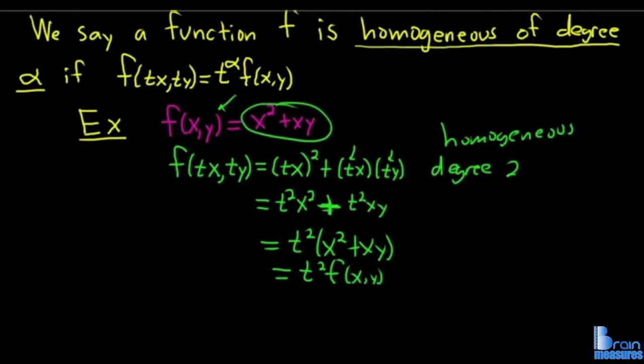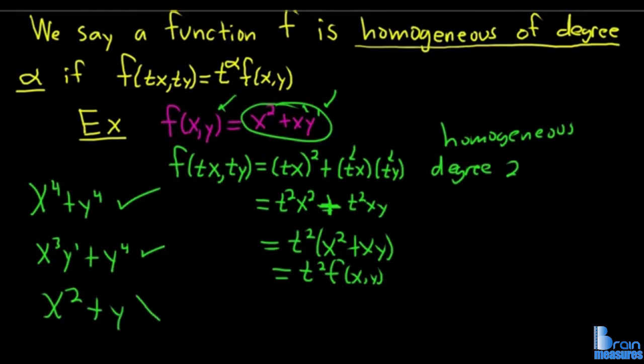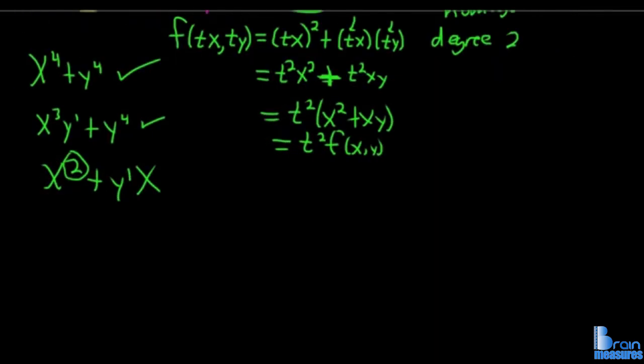Generally it's pretty easy to tell if something is homogeneous. For example, this would be homogeneous of degree 4 because you can add the exponents. This here would not be homogeneous because there's a 1 here and a 2 there.